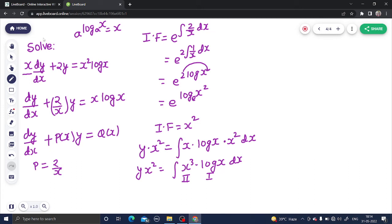So can we do this separately? x³·log(x), taking this as the first function, this as the second function. So first function as it is, integration of second function: x³ integration will be x⁴/4, minus integral of derivative of first function. So derivative of log(x) is 1/x; integration of x³ is again x⁴/4, dx. This will get cancelled; you will get x³ here.